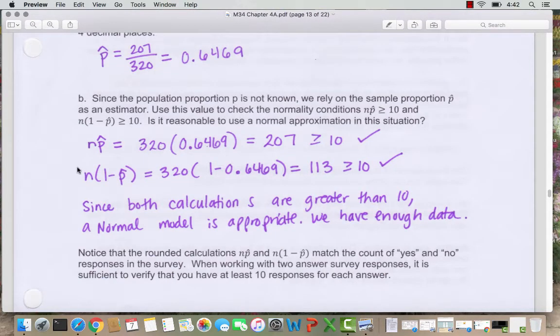You can work through the calculations. n times p-hat, 320 times 0.6469, that gives you 207, which is definitely greater than or equal to 10. If we do n times 1 minus p-hat, that's 320 times 1 minus our probability, that's 113, also greater than 10. So since both calculations are greater than 10, a normal model is appropriate and we have enough data.